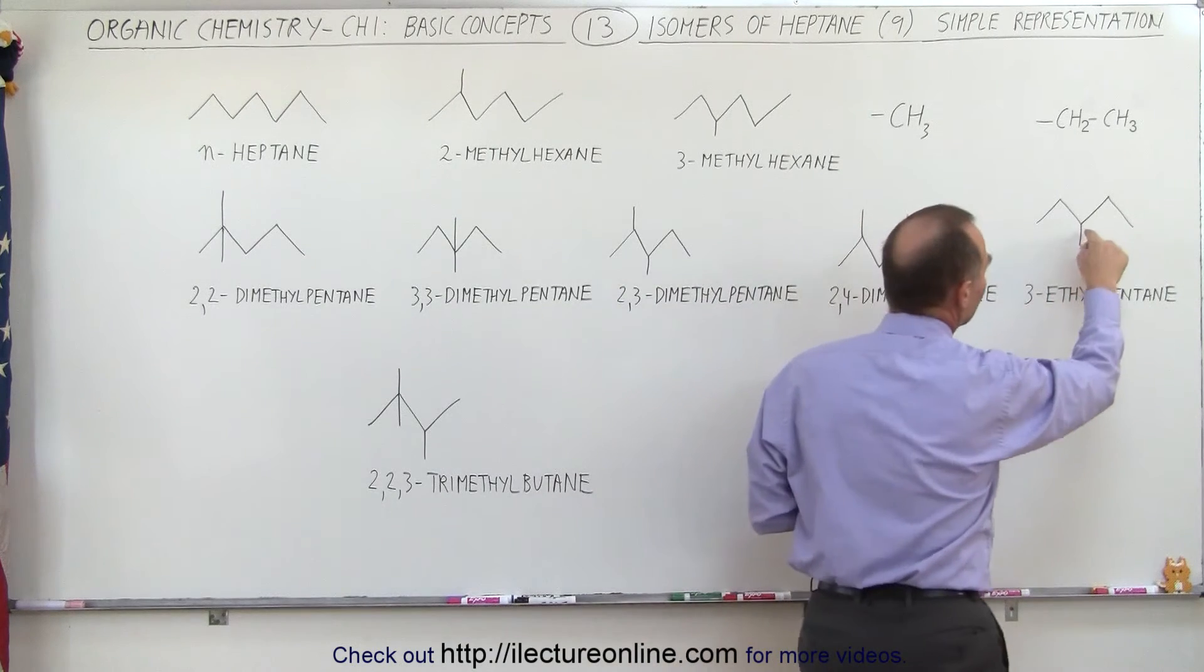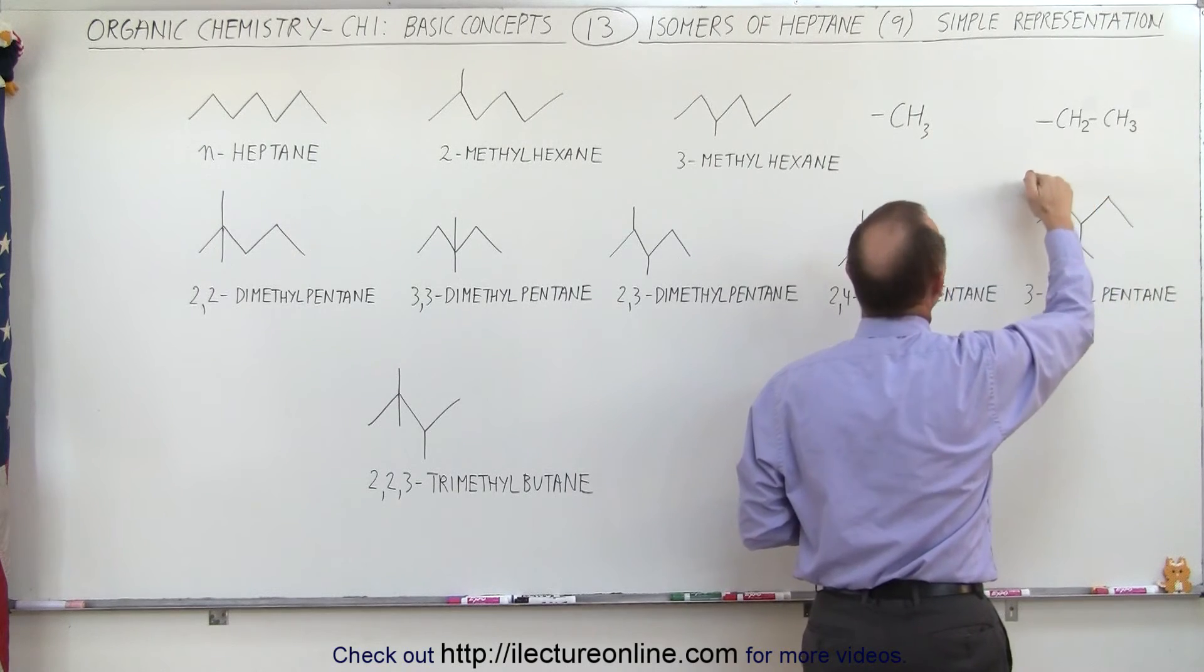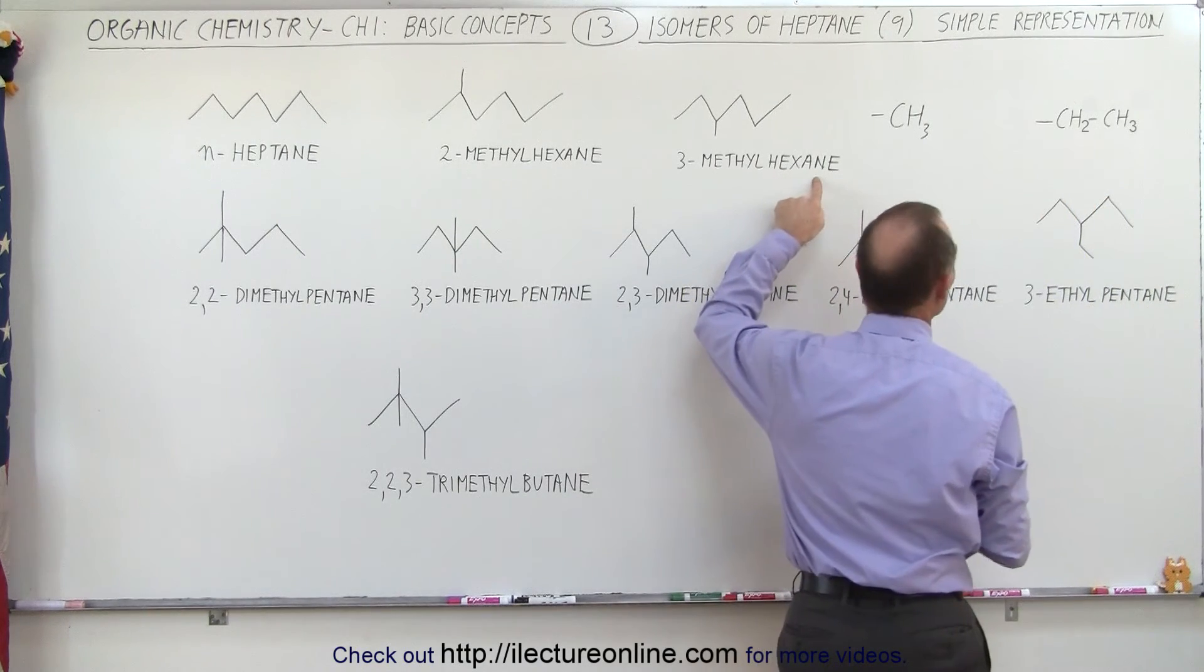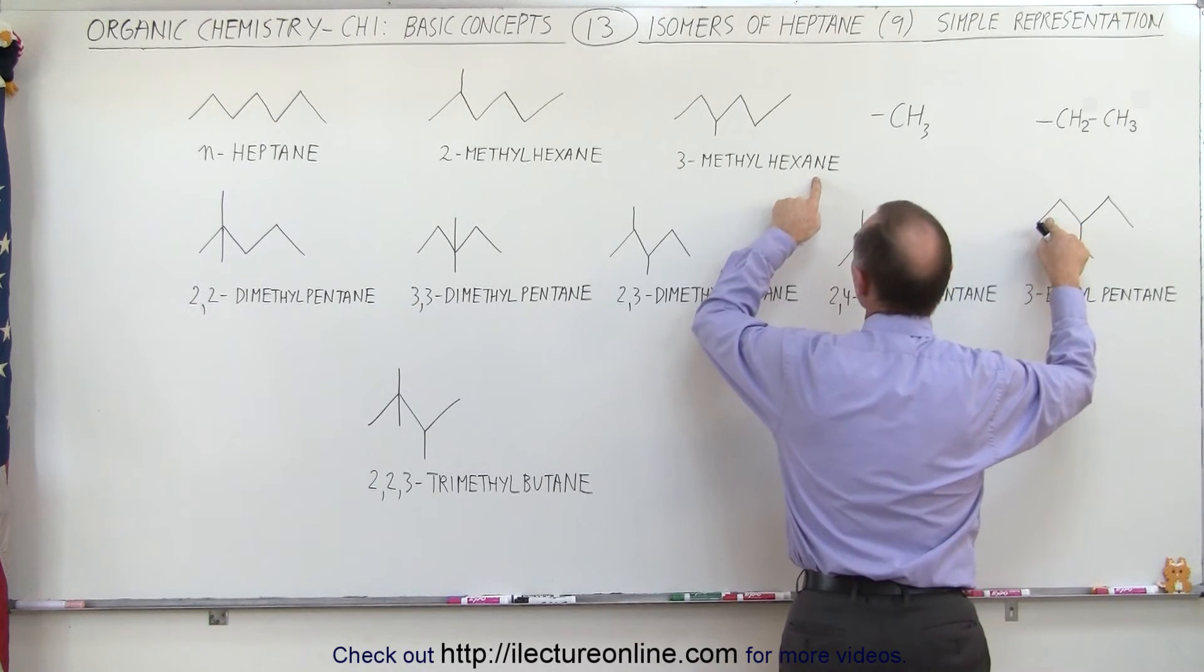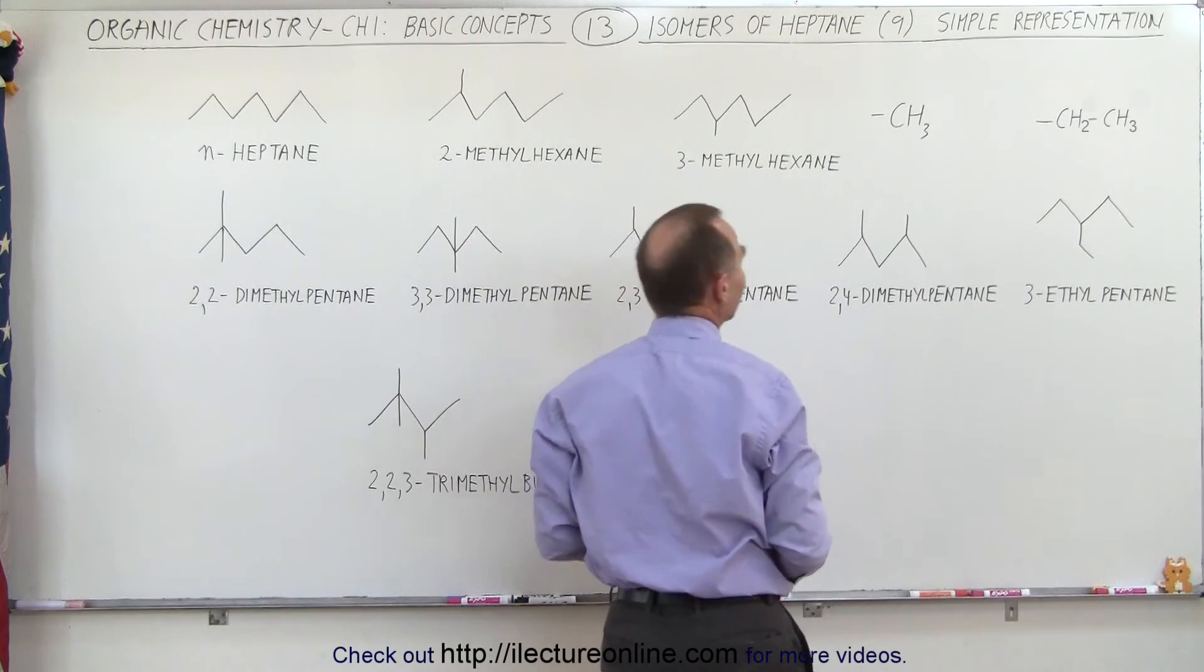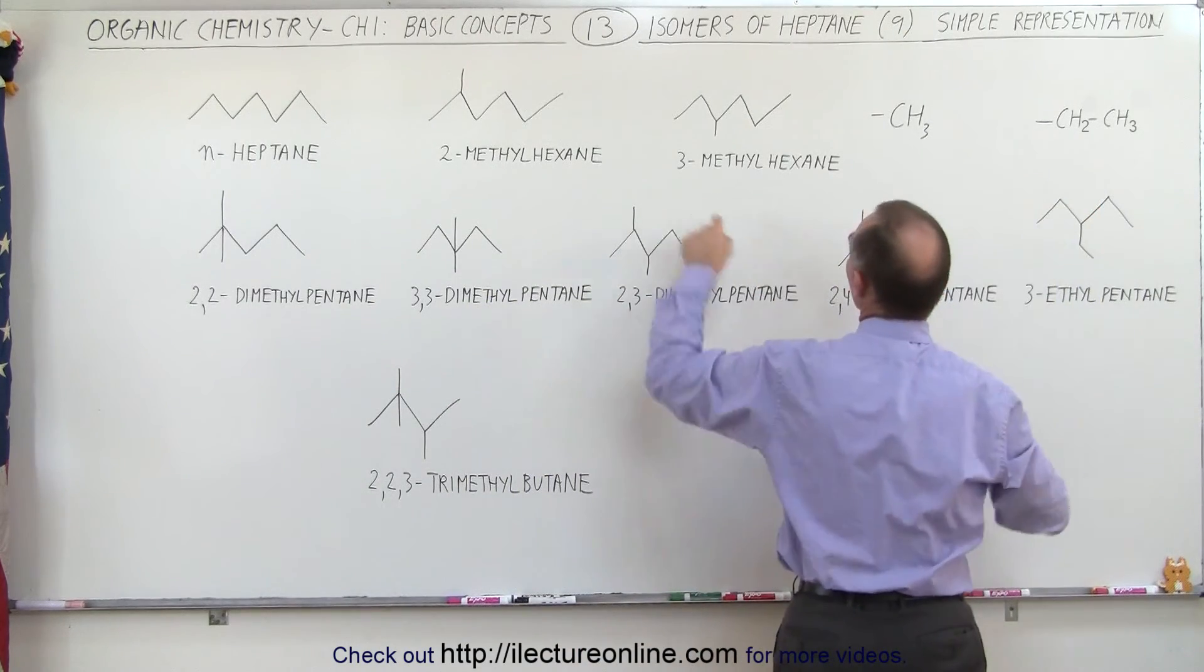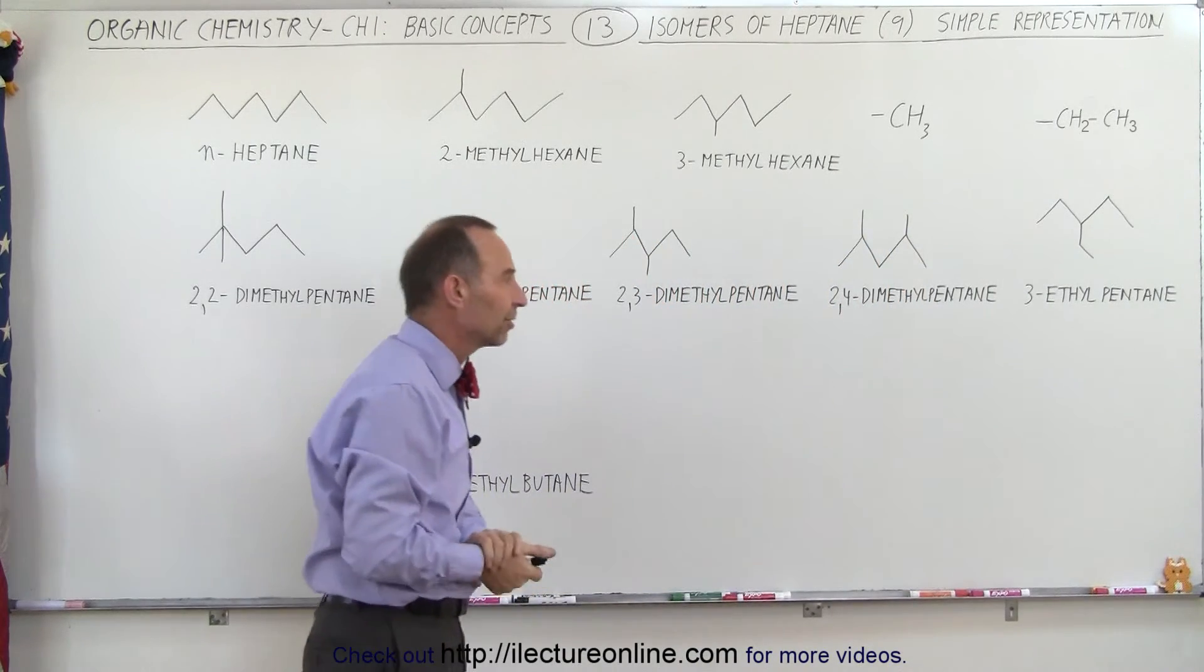Now what happens if we connect an ethyl group to the second carbon? Well then we have again a chain of six carbons. We again have a hexane chain and would have then one ethyl group connected to the second carbon, so we'd end up with a 2-methylhexane again. Or if it's connected to the third carbon, we'd have 3-methylhexane again. So again, it wouldn't give you any more isomers.